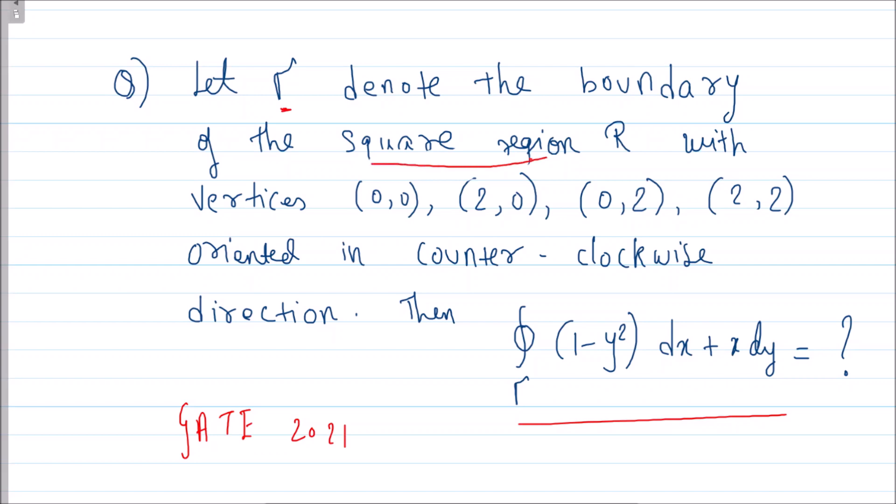In this scenario, gamma is the boundary of a square region R. What is the square region? The region joining these four points: (0,0), (2,0), (0,2), (2,2). It is oriented counterclockwise and I have to find the line integral of a given vector field.